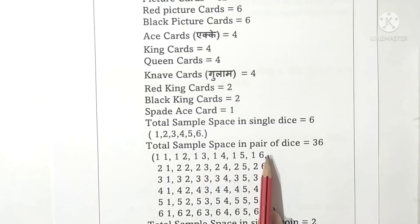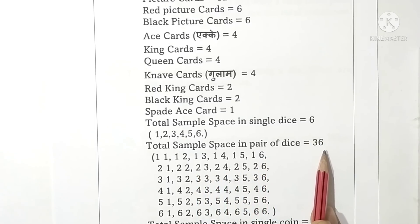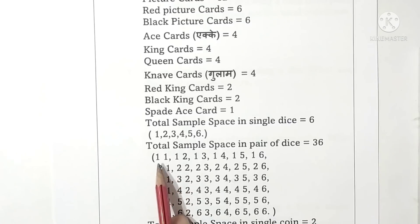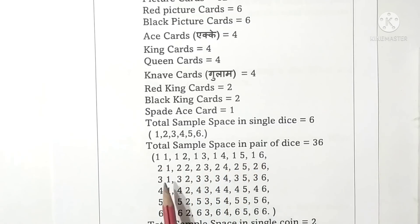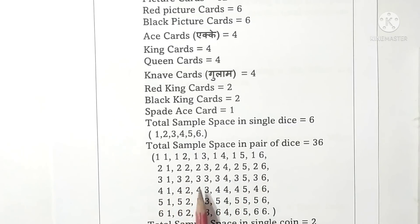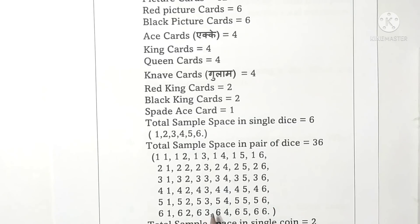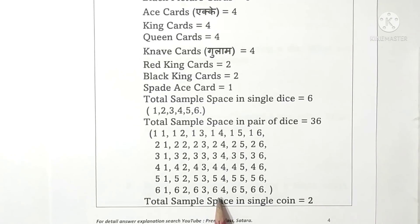Total sample space in a pair of dice is 36. These are: (1,1), (1,2), (1,3), (1,4), (1,5), (1,6), (2,1), (2,2), (2,3), (2,4), (2,5), (2,6), (3,1)–(3,6), (4,1)–(4,6), (5,1)–(5,6), (6,1)–(6,6). These are the 36 samples.